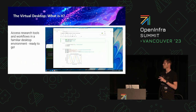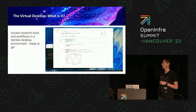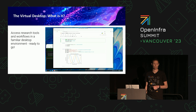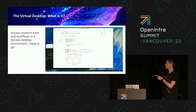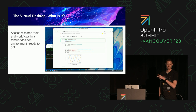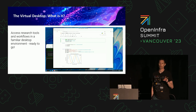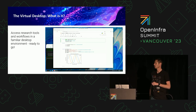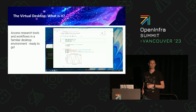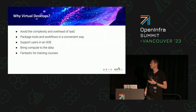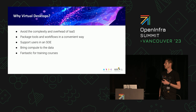The virtual desktop is really a tool for researchers to get easy access to workflows and tools in an environment that they're comfortable with. This is a screenshot from Fedora Scientific with Jupyter Notebook running — these are the kinds of tools that researchers really like to use, particularly Jupyter Notebooks. It's used across a whole range of disciplines. But quite often researchers struggle to install these tools themselves, so part of the reason for virtual desktops is to avoid the complexity and overhead of infrastructure-as-a-service tools.